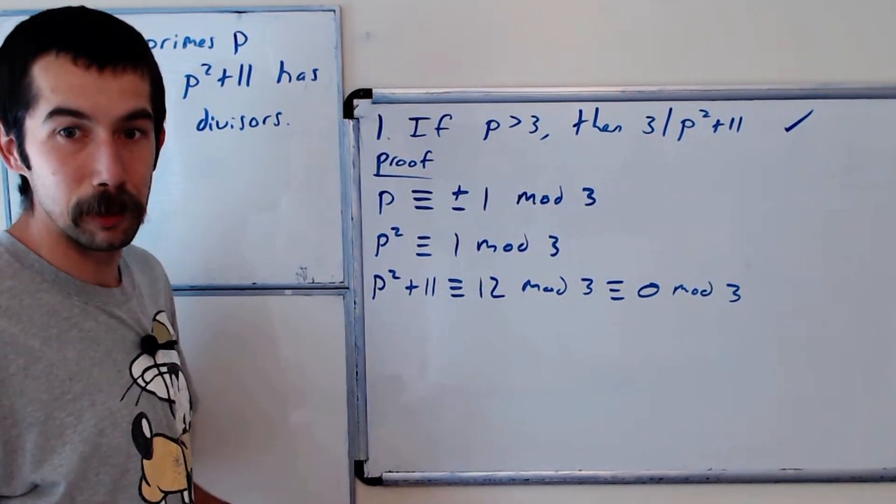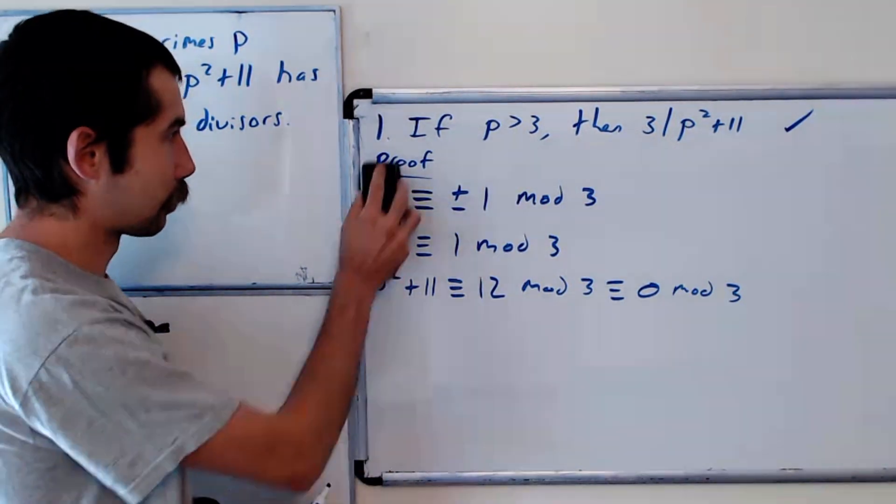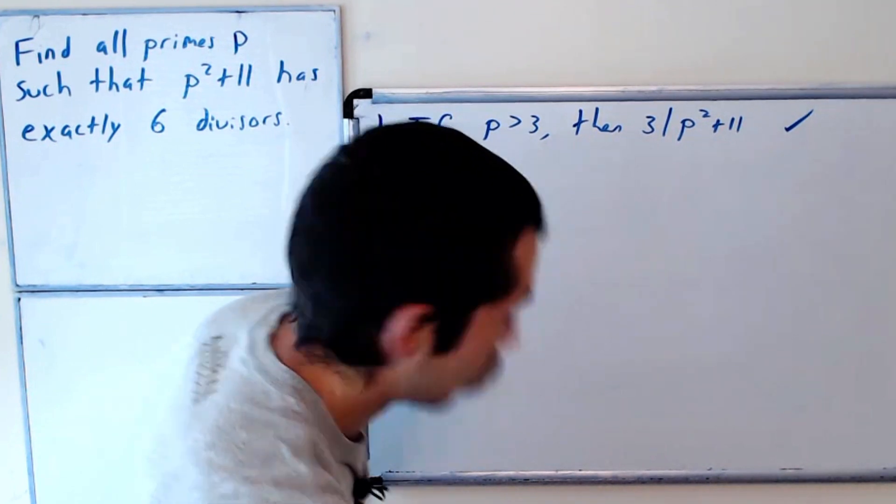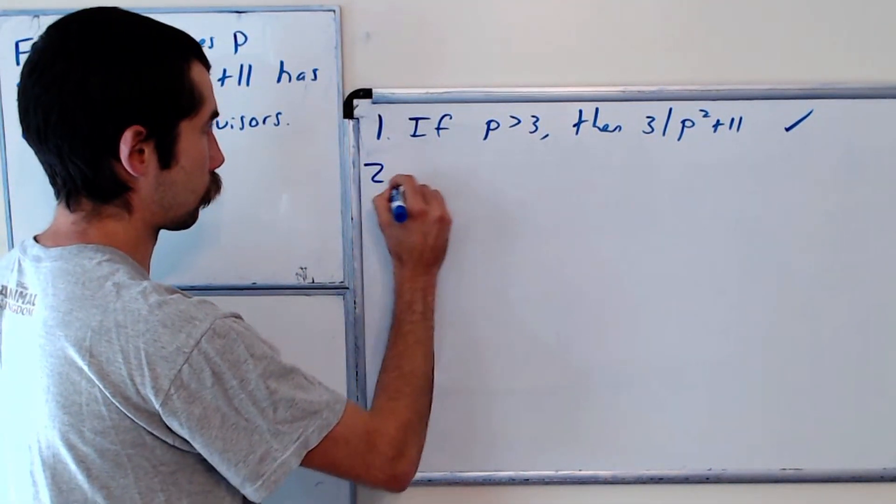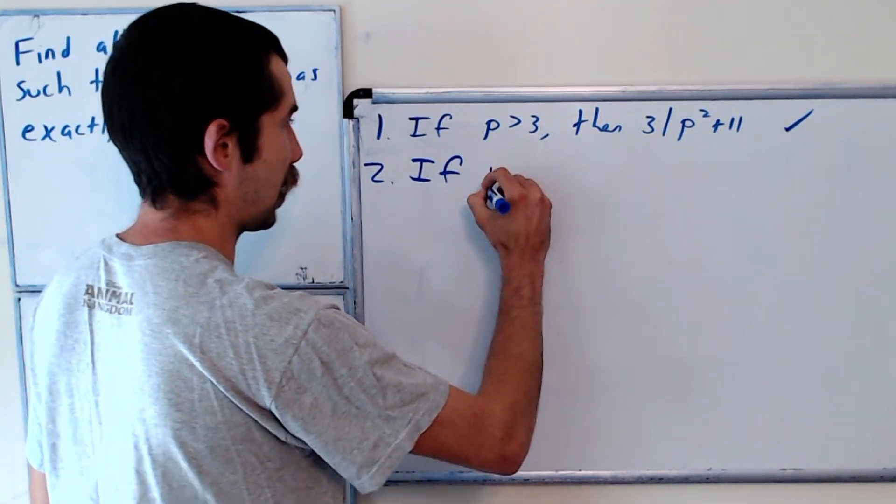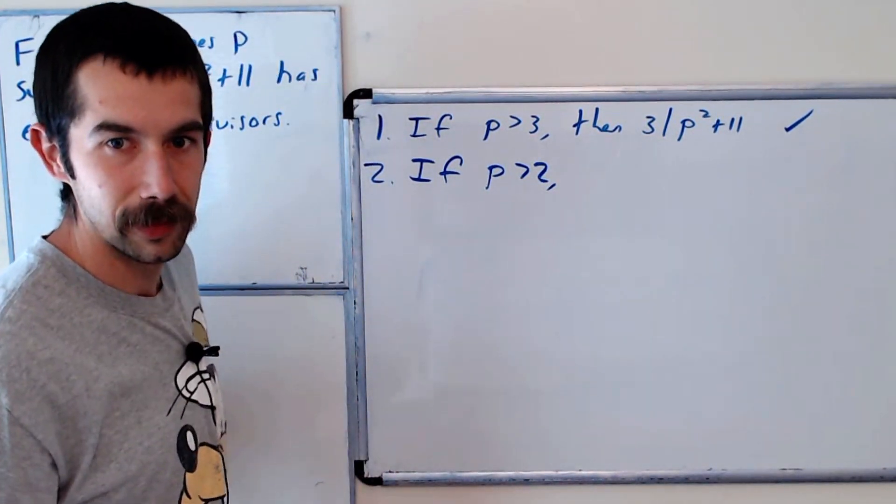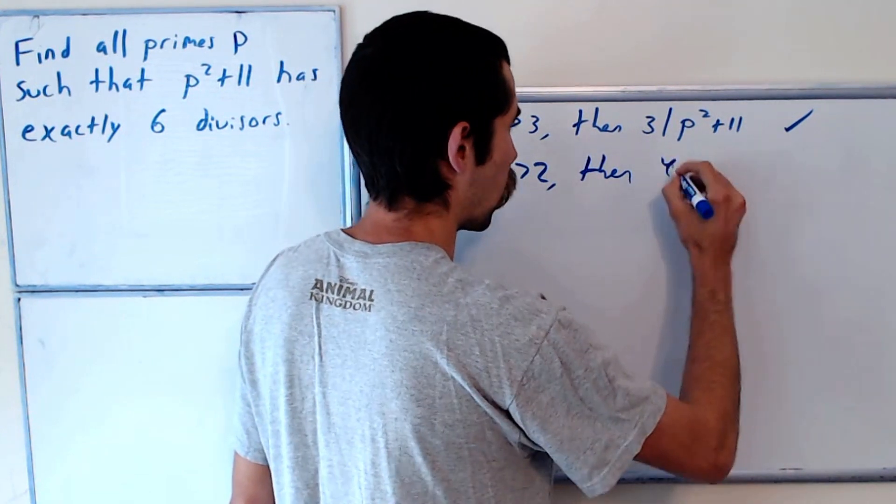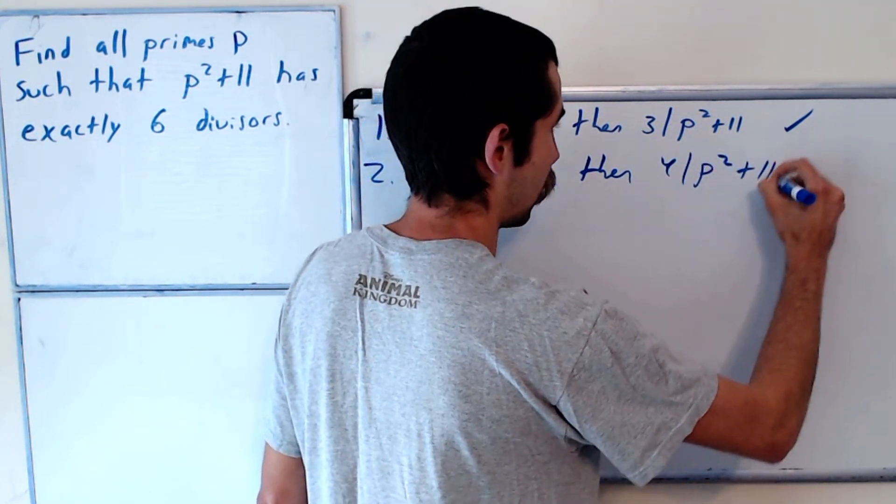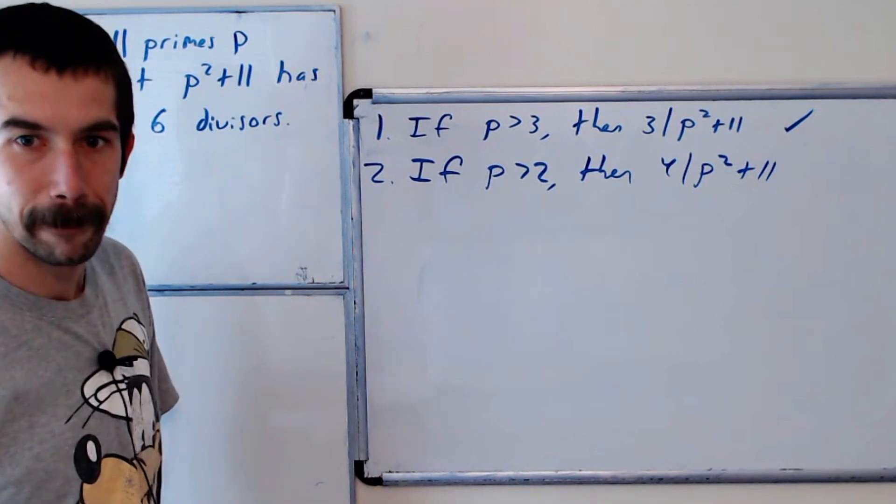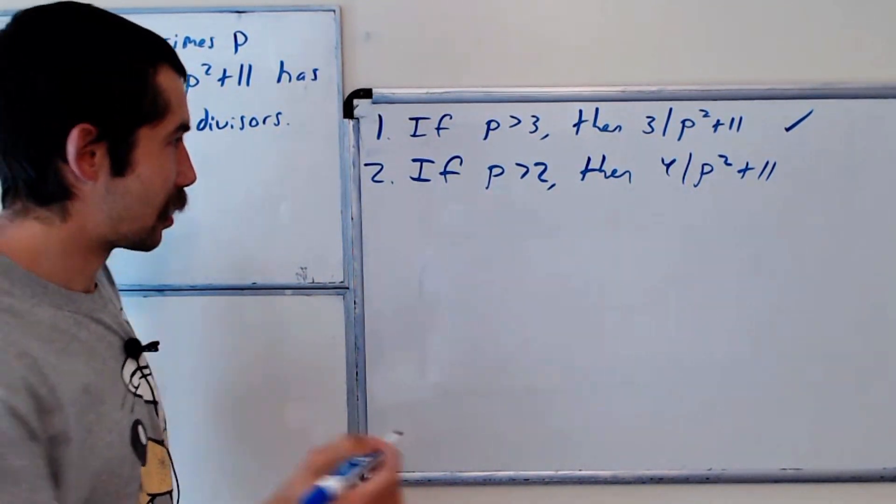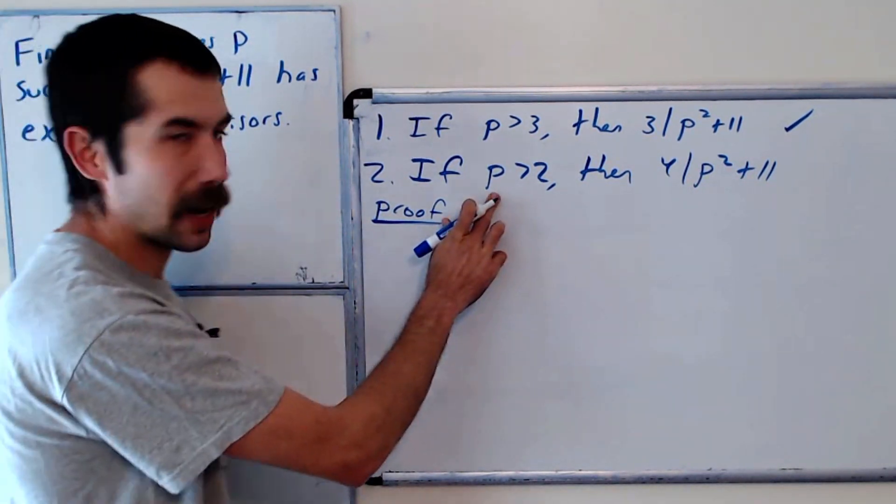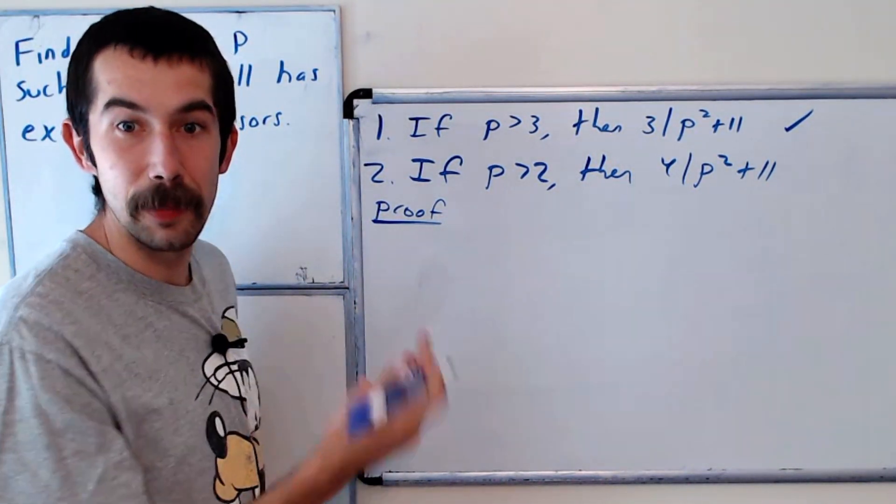The next thing we should prove is that if p is greater than 2, then 4 divides p squared plus 11. Okay, and so again, let's give a quick proof, and the proof is going to be very similar. So any prime that's greater than 2 is going to be odd.